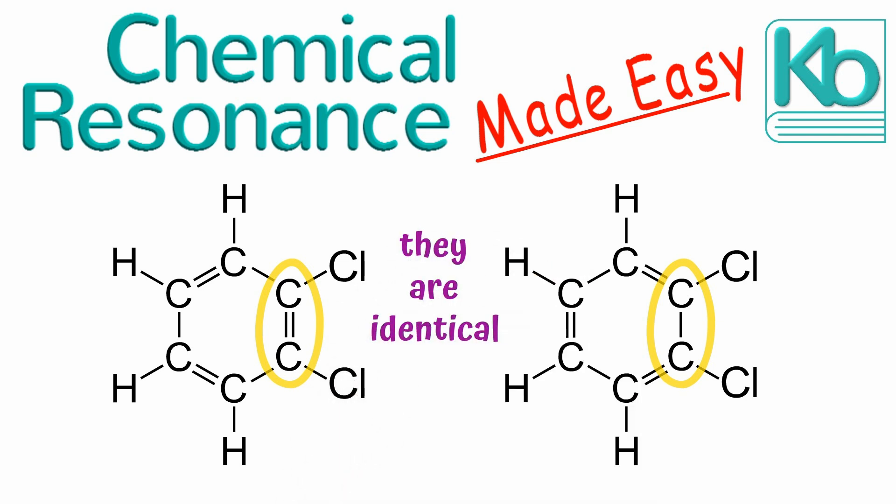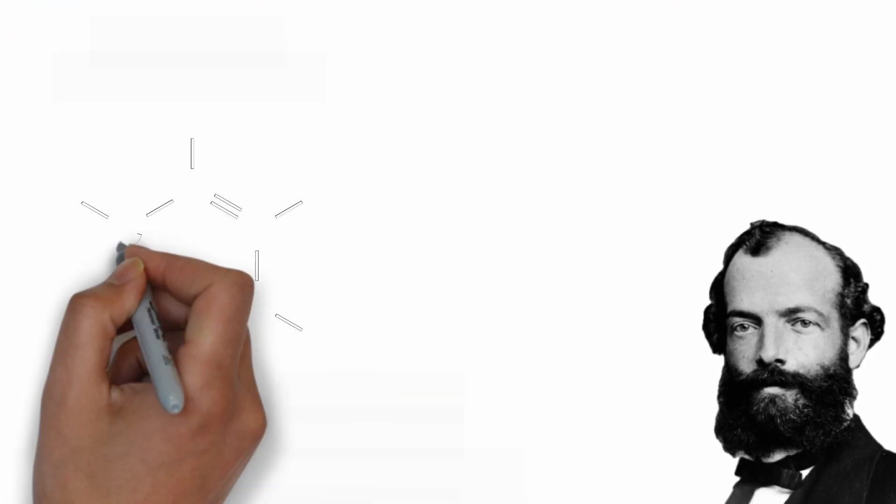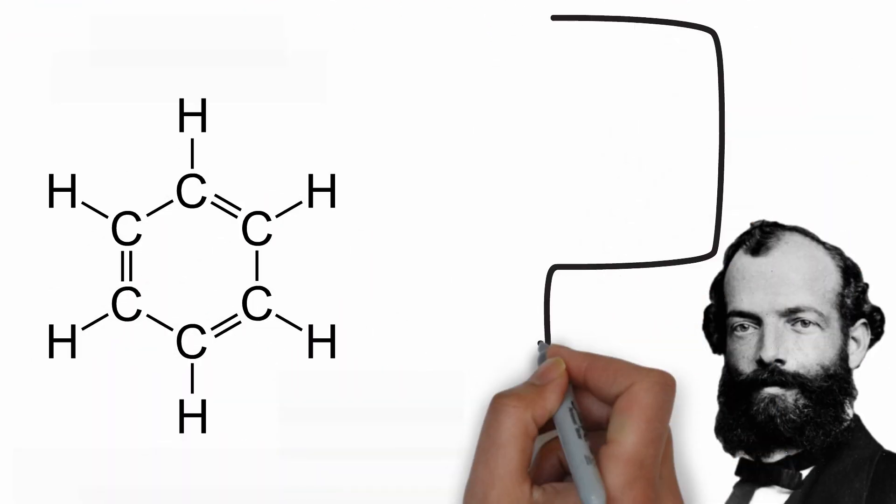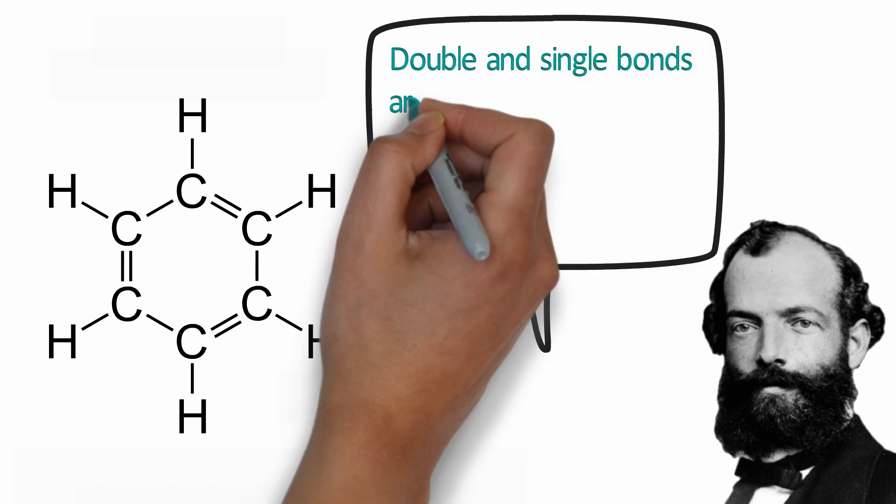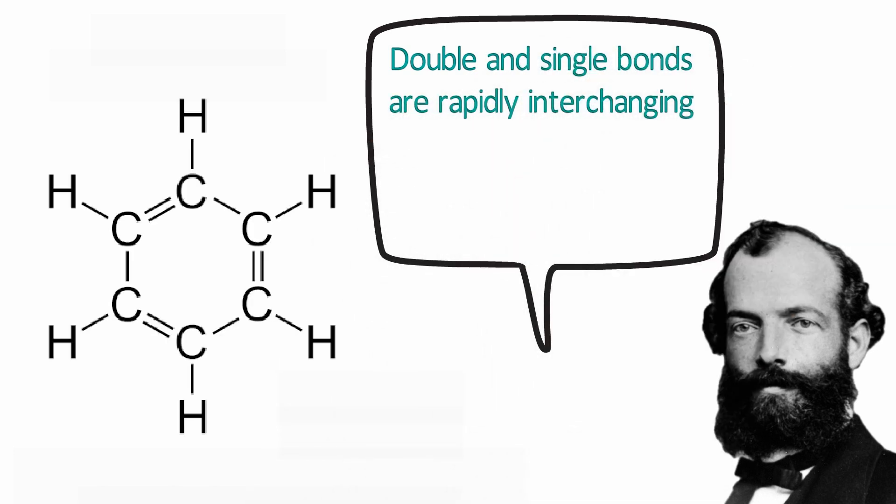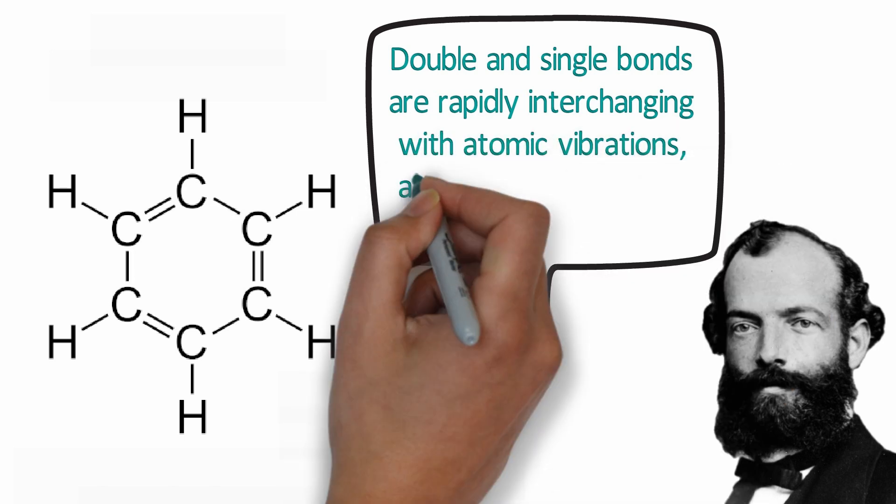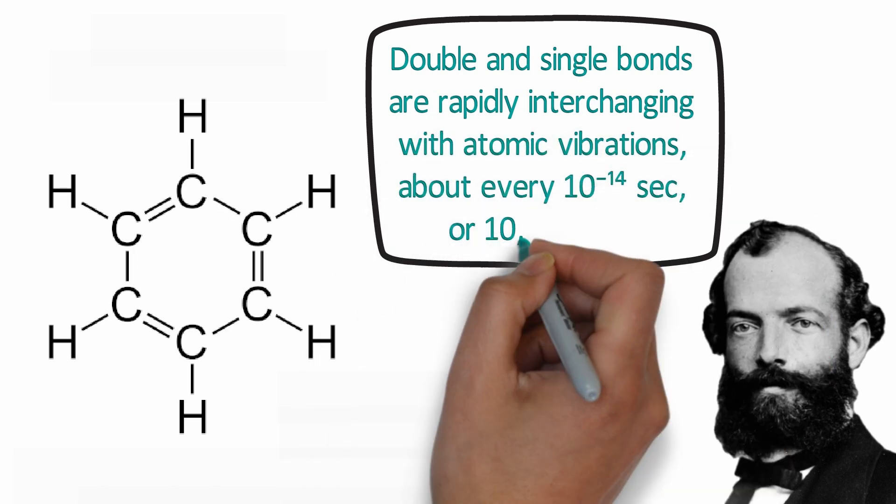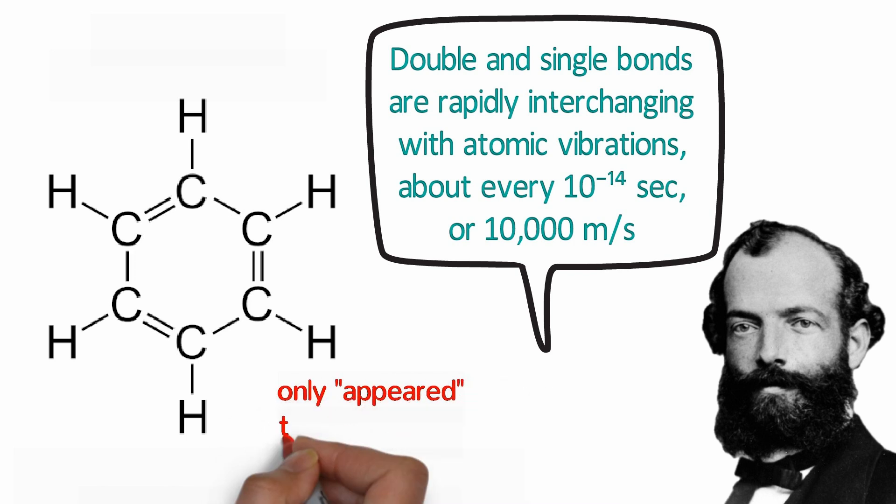To address this problem, Kekule modified his original structure, and in 1872 he published a detailed paper stating that the double and single bonds in benzene are rapidly interchanging. He hypothesized that this interchange of bonds was on the timescale of atomic vibrations so that each of these carbon-carbon bonds appeared to be one-and-a-half bonds rather than alternating single and double bonds.